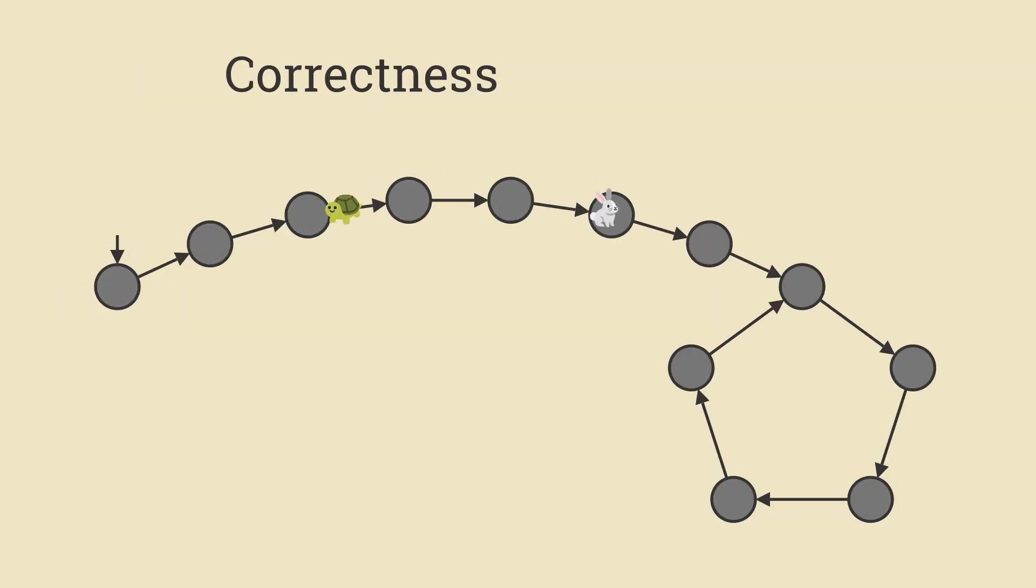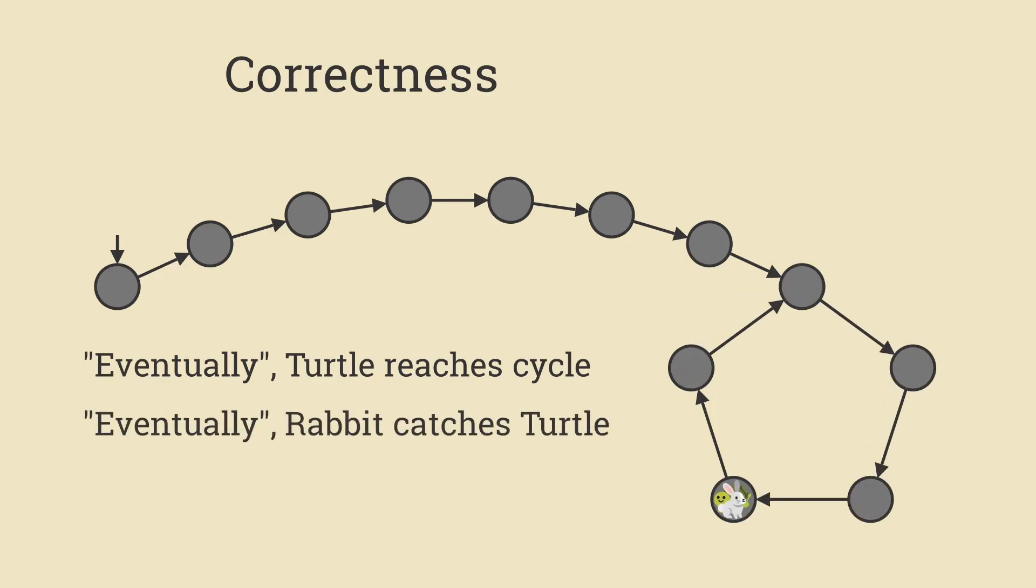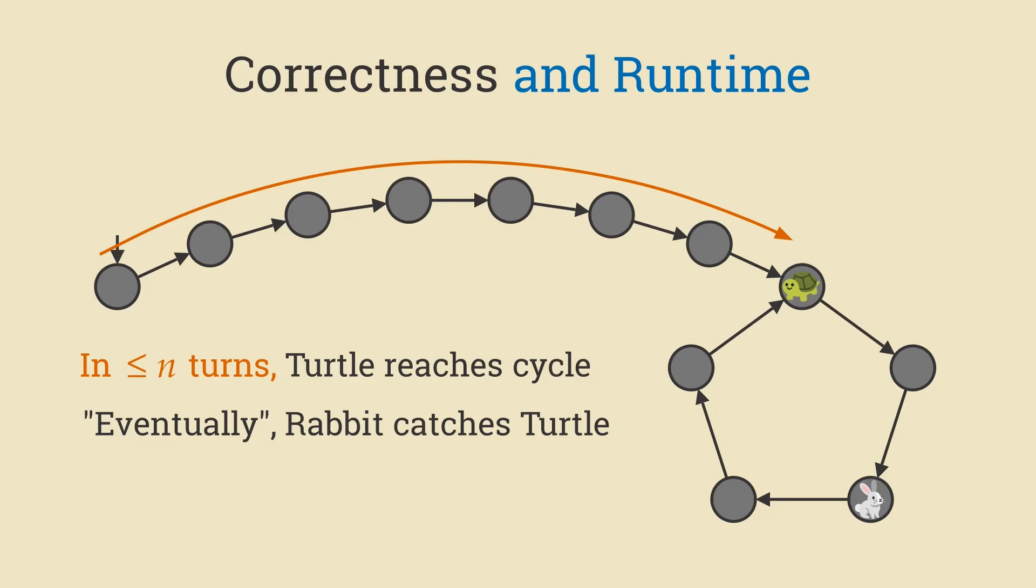The correctness of the whole algorithm can be proved in two parts. First, eventually, the turtle reaches the cycle. At this point, the rabbit is behind the turtle in some sense. So eventually the rabbit will catch the turtle. If you want to be more precise, for the purposes of a runtime analysis, we can quantify exactly what these eventually's mean. What is this distance here that the turtle has to travel? I don't know, but at most n. What is this distance? Once again, I don't know for sure, but I know it can't be more than n. So in total, this algorithm can't take more than 2n turns, which means that the number of moves is also linear in n. So we get a linear time algorithm.